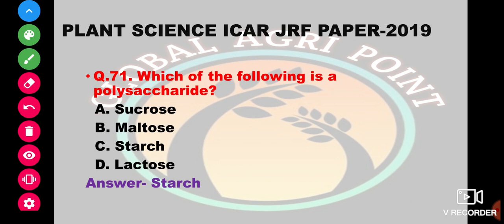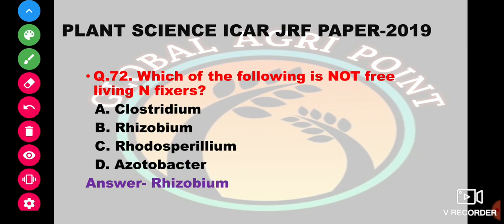Which of the following is a polysaccharide? Polysaccharide means a long chain of saccharides. Sucrose is made of only 2 molecules, maltose is also a disaccharide, and lactose is also a disaccharide. Starch is made up of more than 10 to 20–30 molecules and is called a polysaccharide. So the answer is starch.